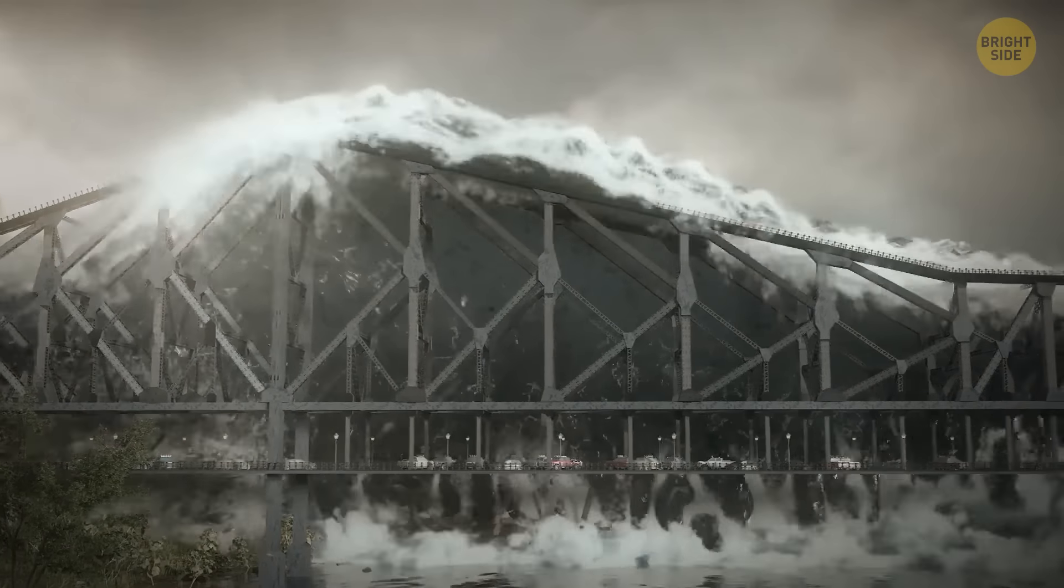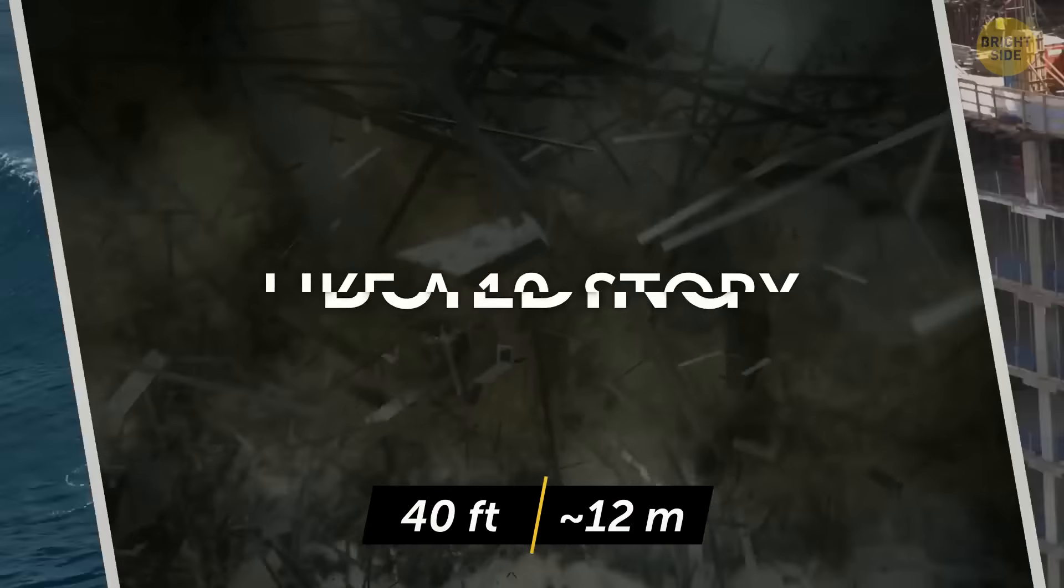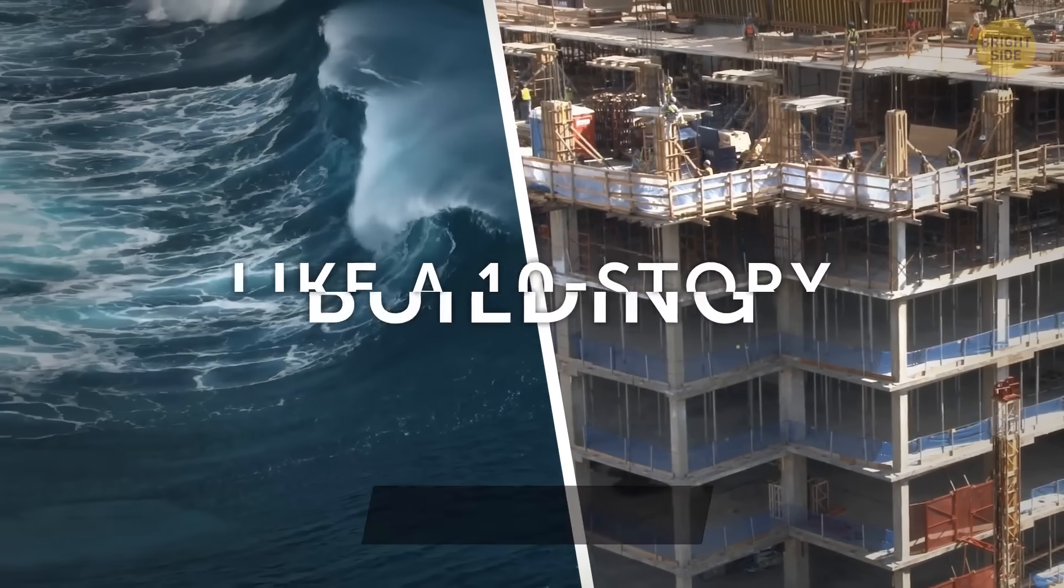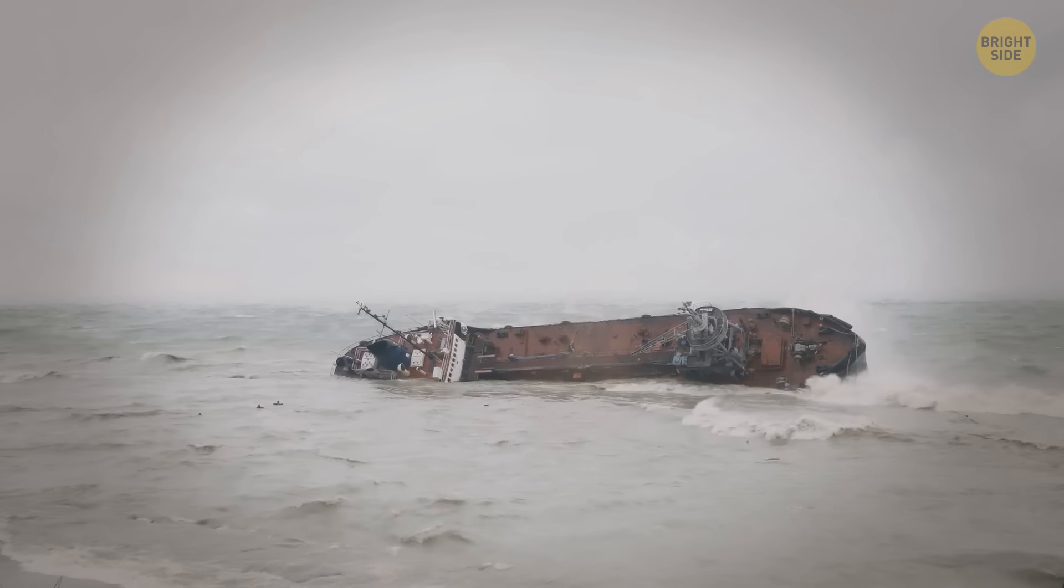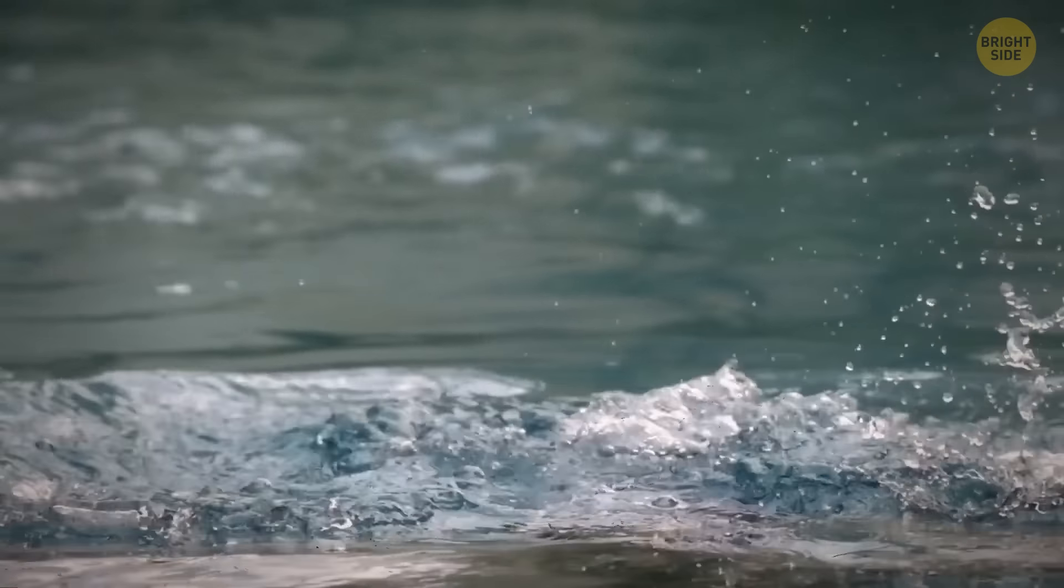Some of the largest rogue waves reached a height of 100 feet. It's like a 10-story building. This giant can easily break even the strongest and largest ship. Scientists can't always predict their appearance and still don't know their nature. So rogue waves make the ocean a much more dangerous place than we thought.